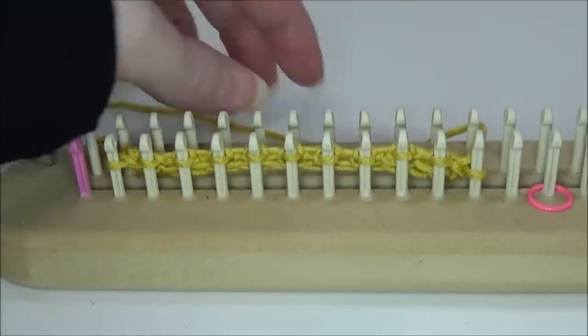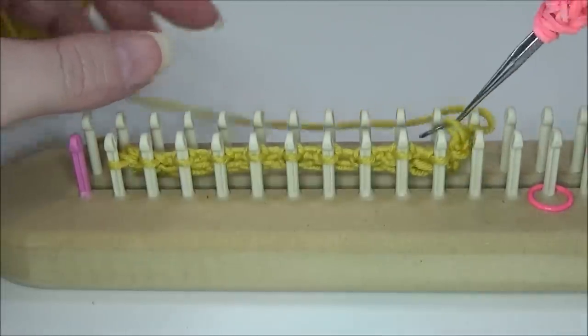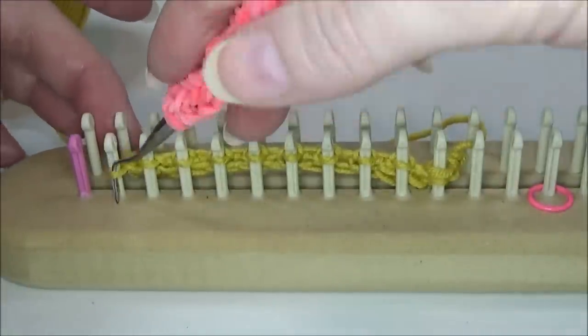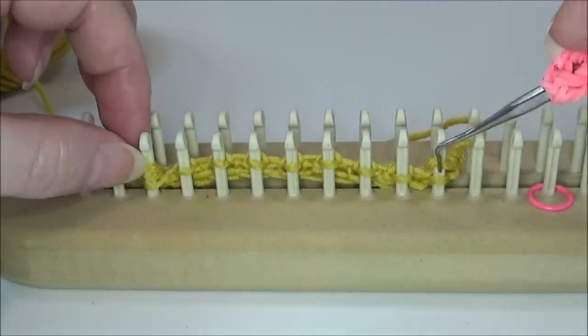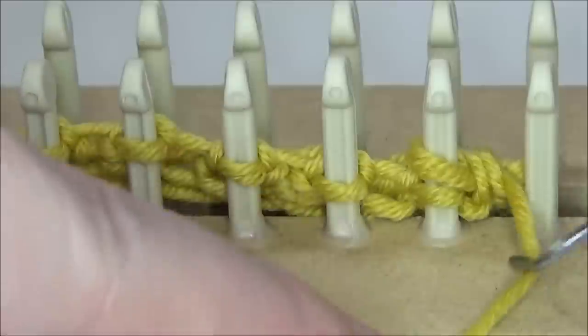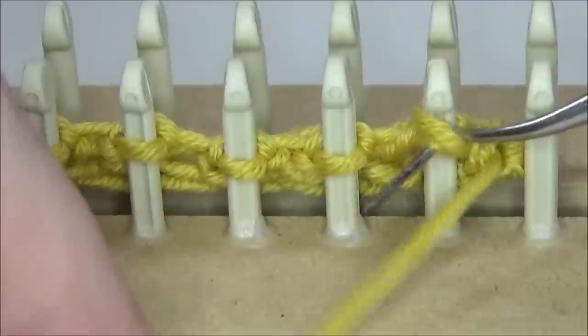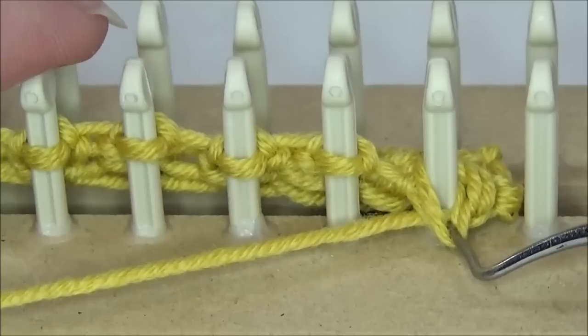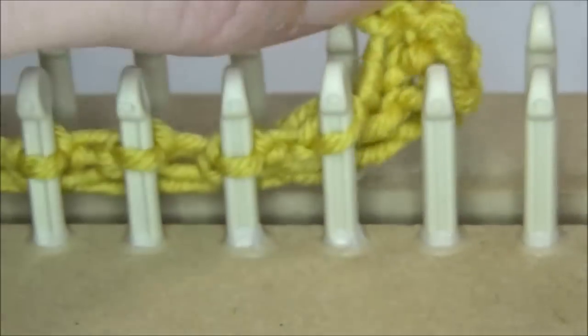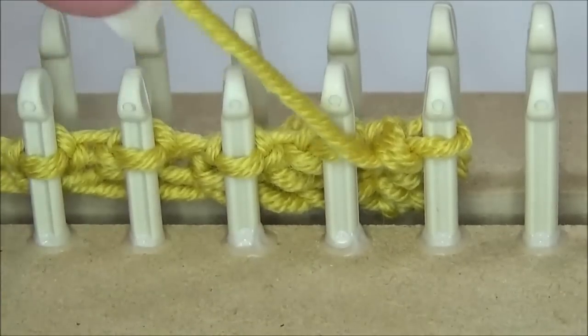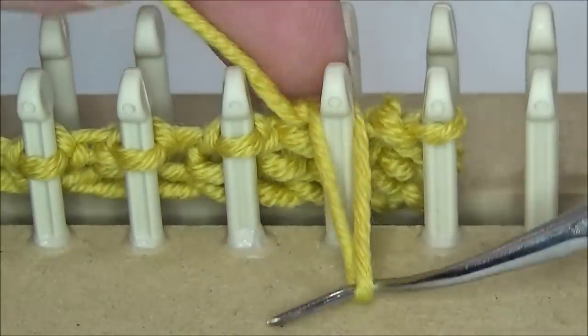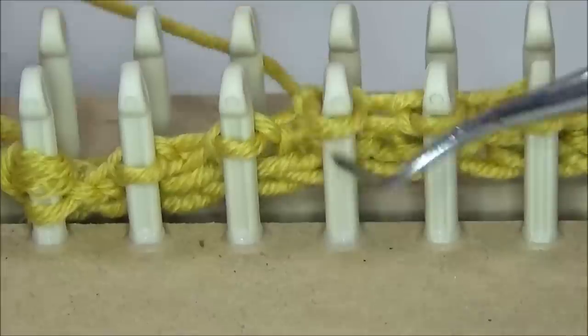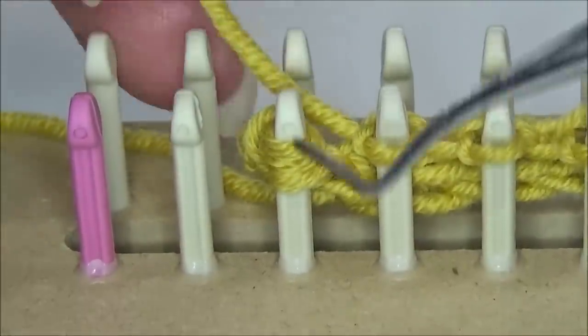Now if your pattern says to purl two together, you're going to do the first step exactly the same as knit two together. Just take your last two stitches and lift them onto the pegs next to them. Now we've got two stitches on each of these end pegs. To purl two together, you would treat it the same way you did the knit two together. Put your hook under both of those loops, lift up a stitch, and purl it off.